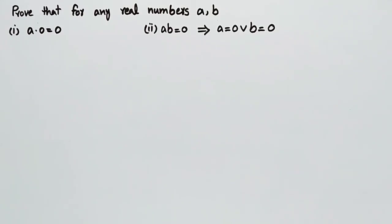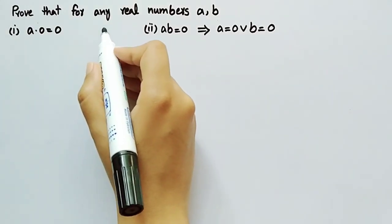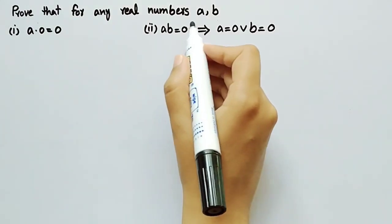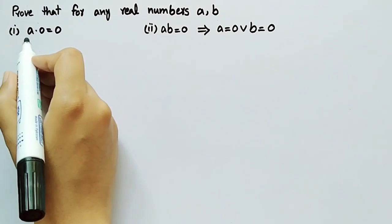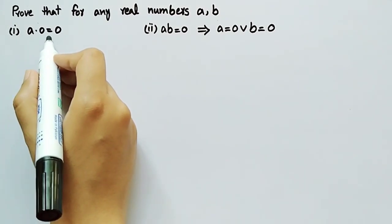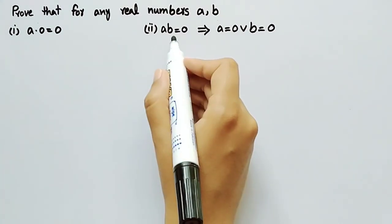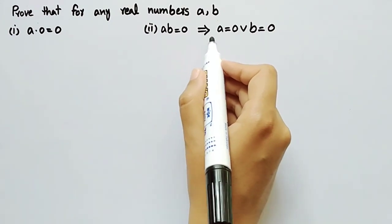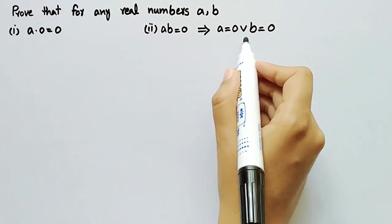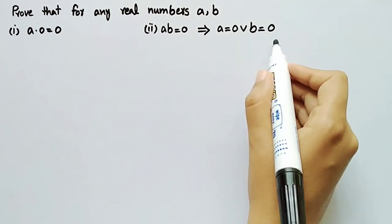In this video, we will prove that for any real numbers a and b, a·0 is equal to 0, and the product a·b equal to 0 implies that a is equal to 0 or b is equal to 0.